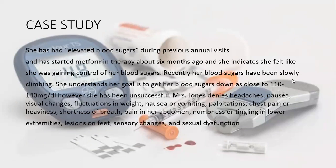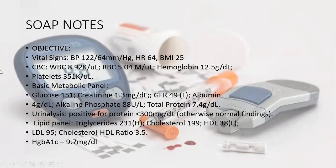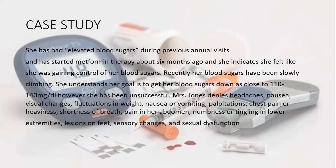She has had elevated blood sugar during previous annual visits, and because of that she has been on metformin therapy for about 6 months, which has not achieved adequate control. She is now trending back toward hyperglycemia. In order to achieve her goal of 110 to 140, a change in her dose is needed. Mrs. Jones denies nausea, fluctuation in weight, or vomiting.